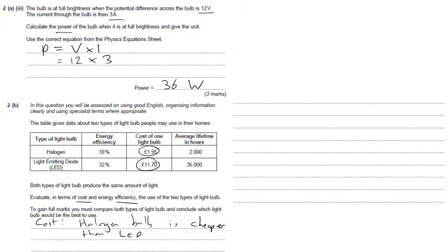And I would say that the halogen bulb is clearly cheaper than the LED. If we want to do a calculation on that, we could say that in fact, the LED is six times the price of a halogen bulb, because six times £1.95 is £11.70. So we could say LED is six times more expensive.